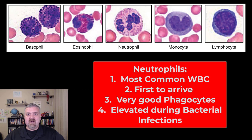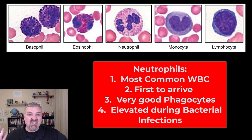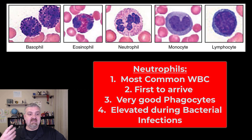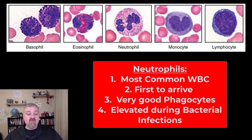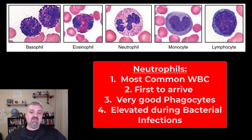They're the first to show up and they're awesome phagocytes, especially of bacteria. They can release lysozyme, which is a chemical that can break down the cell walls of bacteria. They actually use hydrogen peroxide as a killer of microorganisms, and they have bacteriocins or defensins — proteins that can break down plasma membranes of bacterial or fungal cell walls. So they're important for other types of infections but definitely think bacteria when you think neutrophils. If somebody has a high neutrophil count, it generally means a bacterial infection until proven otherwise.